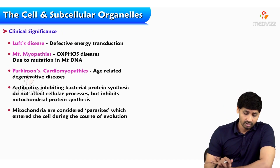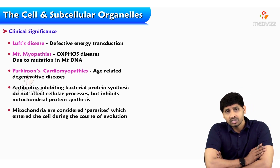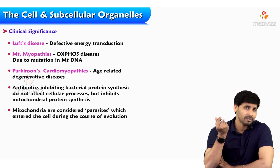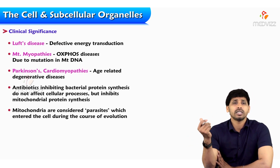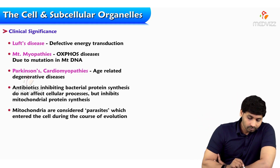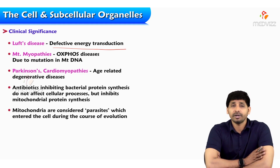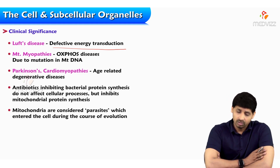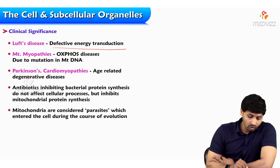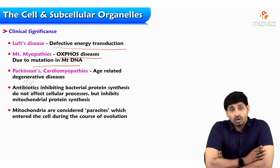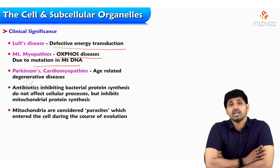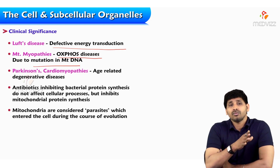If mitochondria is not functioning properly, several disorders can arise. First is Lowe's disease — due to defective energy transduction where the Krebs cycle and electron transport chain do not work properly, causing no energy transduction. Second are mitochondrial myopathies, which are oxidative phosphorylation diseases caused by mutations in mitochondrial DNA. If oxidative phosphorylation through the electron transport chain is defective, no ATP is produced.